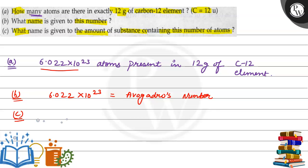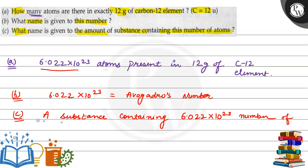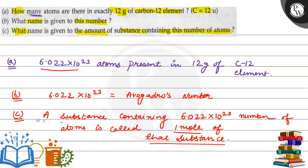Now the third part is: what name is given to the amount of substance containing this number of atoms? That is, what name do we give to that substance which has 6.022 into 10 to the power 23 number of atoms? So we can write down that any amount of substance containing 6.022 into 10 to the power 23 number of atoms is called one mole of that substance.